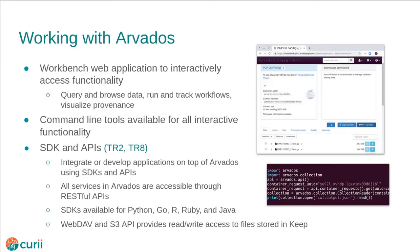For day-to-day use, Arvados offers a web workbench application and command line tools, which we saw in the demo. Data Commons Technical Requirement 2 is data and data model exposed through an API. Arvados can be accessed programmatically through an API. Arvados offers software development kits for several different languages — currently Python, Go, R, Ruby, and Java. SDKs make it easy to access the underlying REST API, as well as direct access to Datastore and Keep. In addition, software can access files in Keep through WebDAV and S3-compatible APIs.